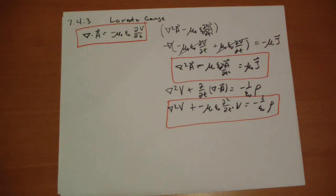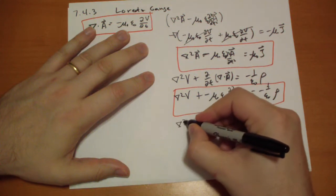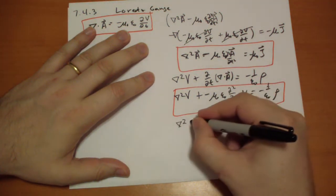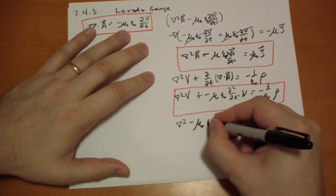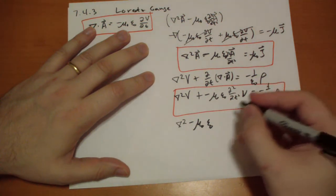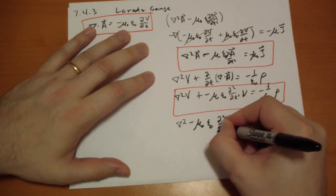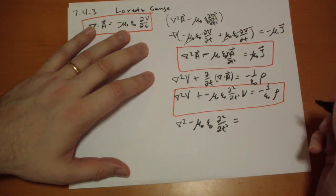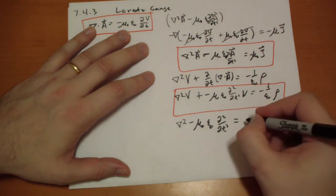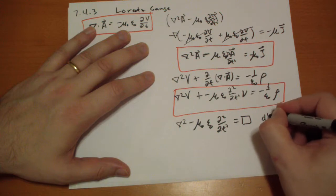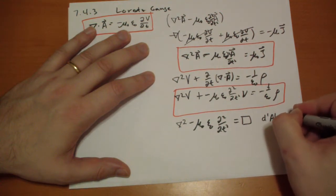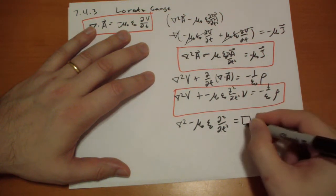So this operation of taking the Laplacian of something and subtracting mu naught epsilon naught of the second time derivative, we call that the d'Alembertian. Excuse my pronunciation.